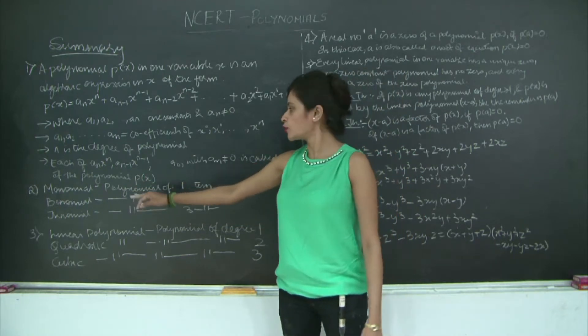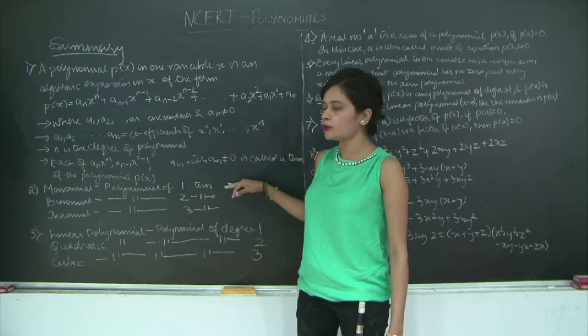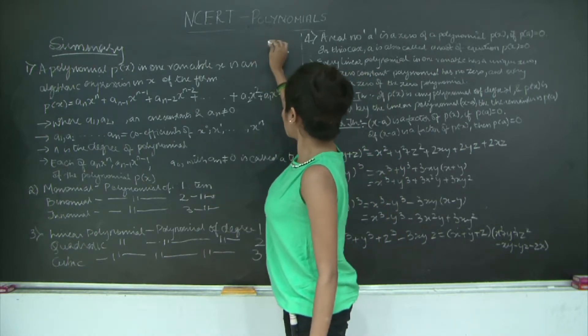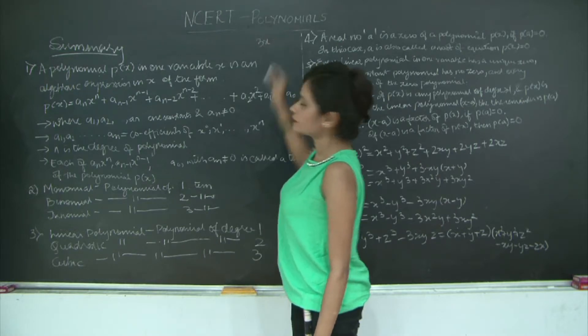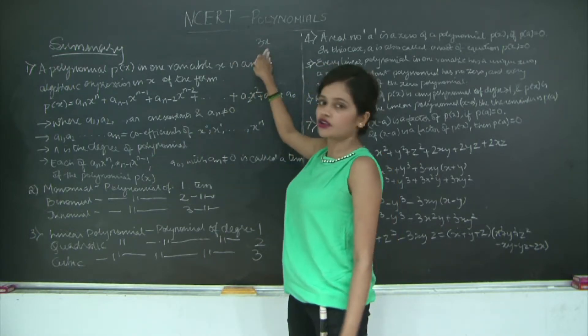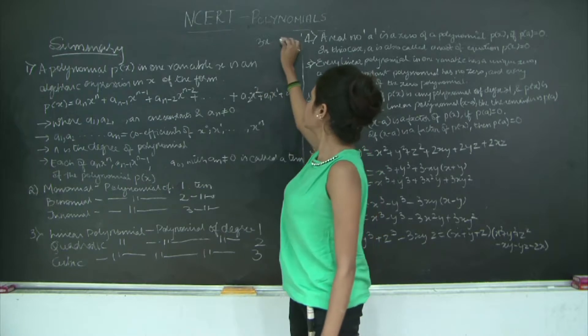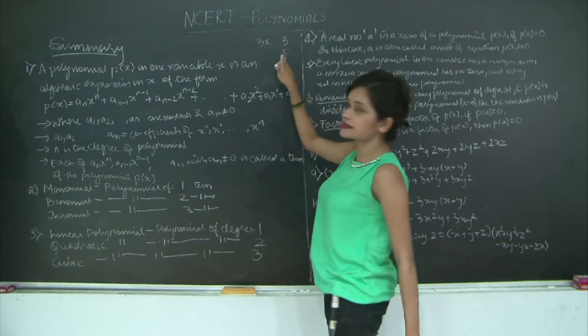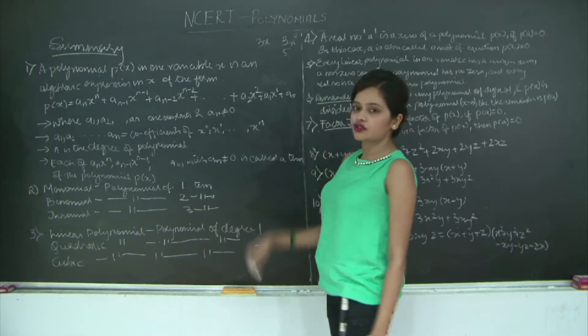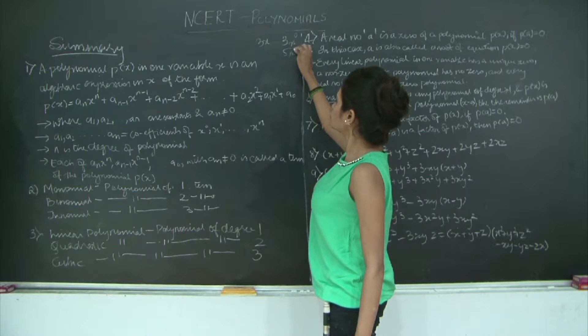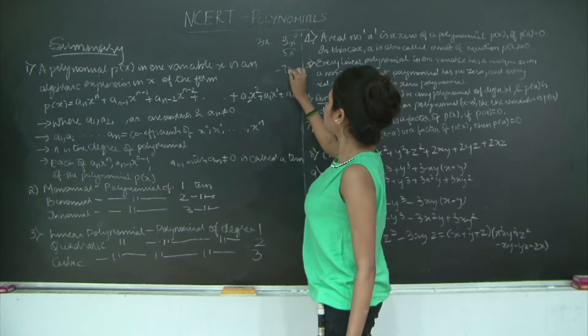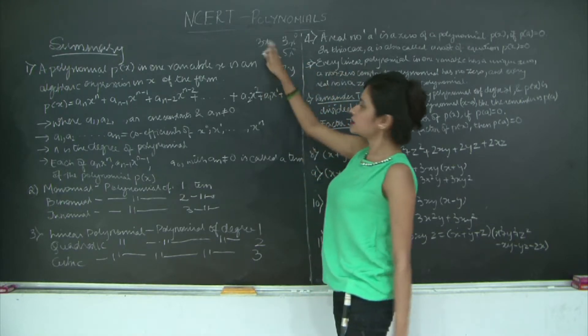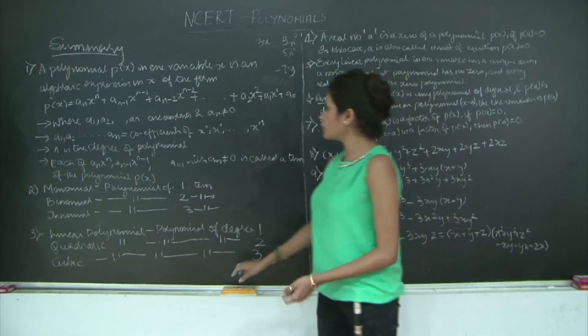Now, monomial. What is a monomial? A polynomial of one term is called a monomial. If I have a term, let's say 3x, this is only one term, so it is a monomial. Even if I have 3 or let's say 5, there is just one term. Why would you say that this is a polynomial? Because 3 can be written as 3x⁰, 5x⁰, or even -7x, 7y or -7y. This is just one term, therefore it is a monomial.